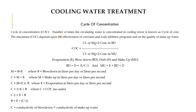Cycle of Concentration (CoC): the number of times the circulating water is concentrated in the cooling water system is known as the Cycle of Concentration. The maximum CoC depends on the effectiveness of corrosion and scale inhibitor programs and on the quality of makeup water added. CoC = chloride or magnesium concentration in blowdown ÷ chloride or magnesium concentration in makeup water. It also depends on evaporation (E), blowdown, drift loss, and makeup.